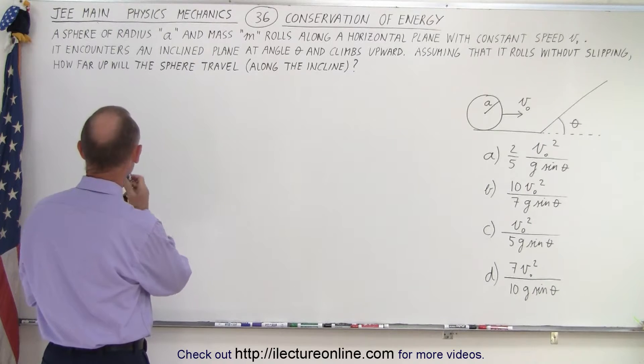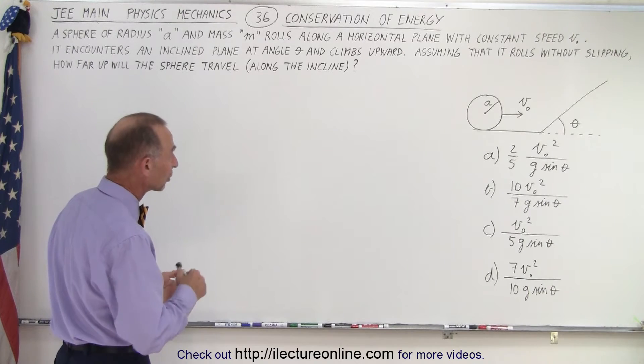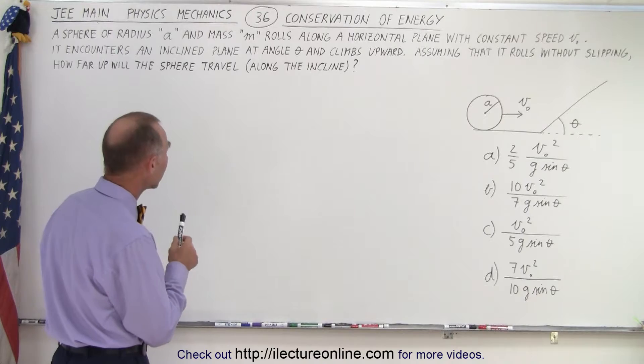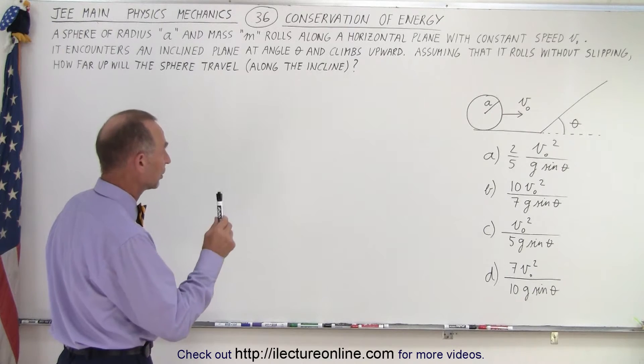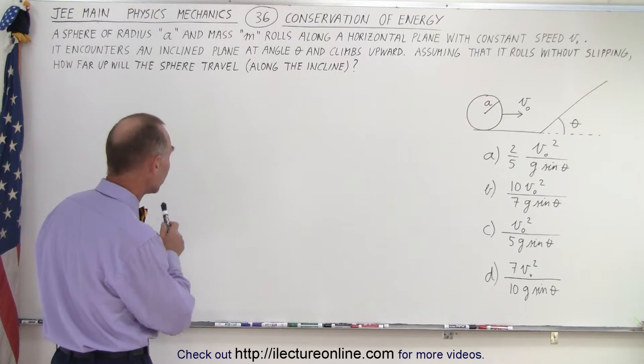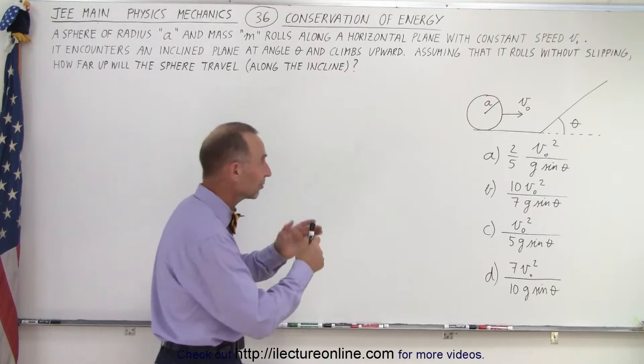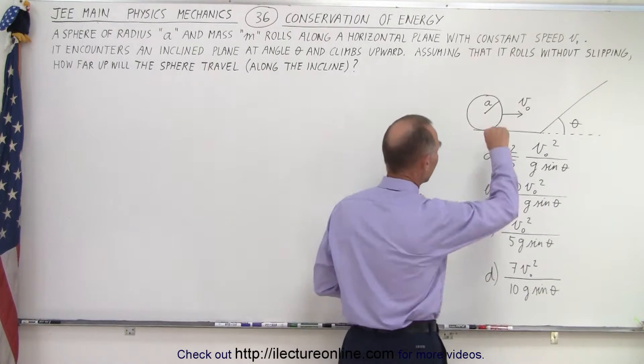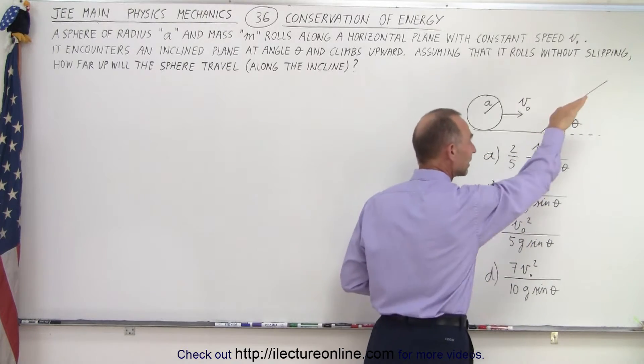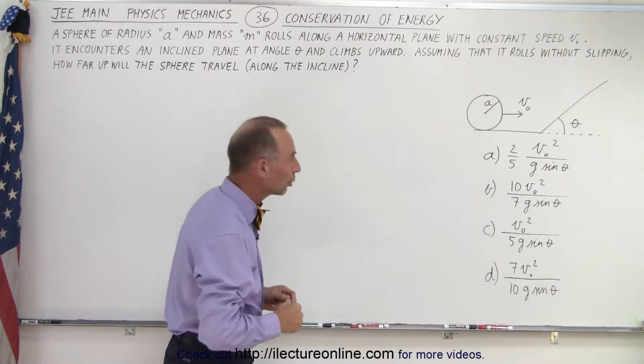A sphere of radius A and mass M rolls along a horizontal plane with constant speed V. It encounters an inclined plane at angle theta and climbs upward. Assuming that it rolls without slipping, how far up will the sphere travel along the incline? They gave us a little diagram here. I have a rolling sphere that reaches the incline. They want to know how far up the incline, not height-wise, but along the incline distance-wise, it will go.